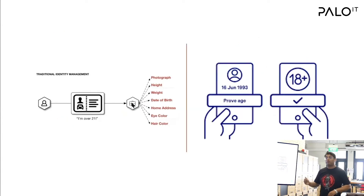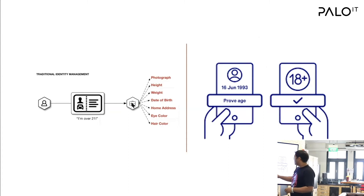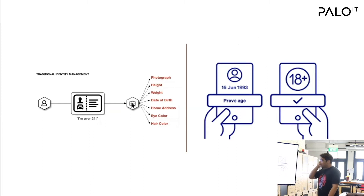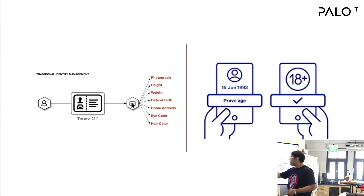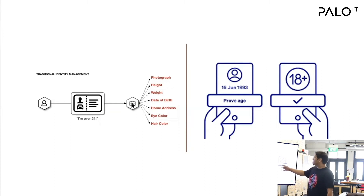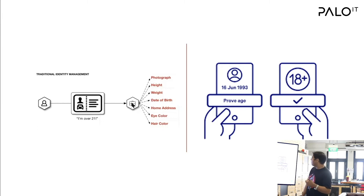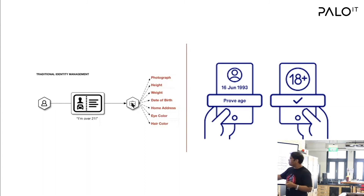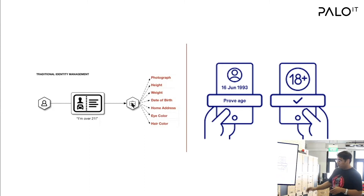Another really cool concept of SSI is zero knowledge proof, or selective disclosure of your information. For example, when you go to a nightclub and the bouncer asks if you're over 21, we currently show our driving license which contains our photograph, height, weight, and other extra information that the bouncer doesn't need. But with SSI, the bouncer can just send a proof request asking whether you are 21 or over, and you send back 'yes, I'm over 21' without disclosing any other attributes. This is known as zero knowledge proof, and with SSI it is possible.